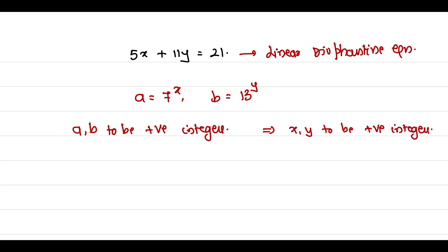To further justify: if x is 0.5, 0.3, or 0.2, then A cannot be a positive integer — it will be some decimal, which is not accepted. If x is negative, then A will be in decimals, and if y is negative, then B will be in decimals. Hence, to satisfy the equation 5x plus 11y equals 21, both x and y must be positive integers.